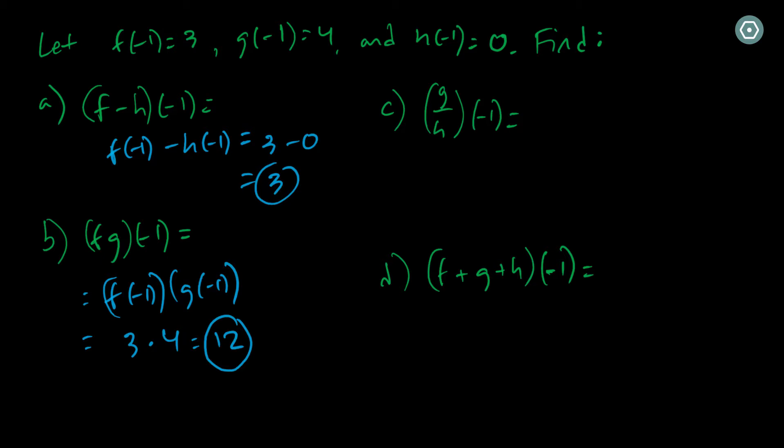For part c here, we have g over h of negative 1. And so that simply has to be g of negative 1 divided by h of negative 1. But this is going to be a problem, because this is 4 divided by 0, and that does not exist.